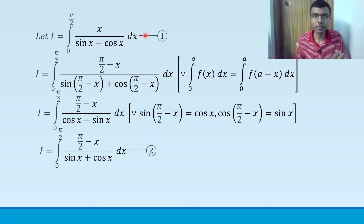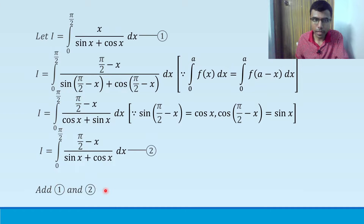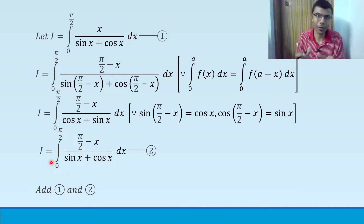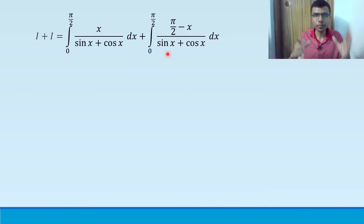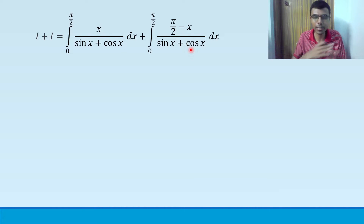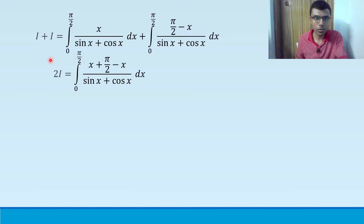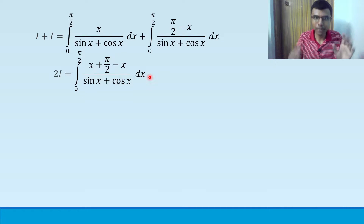Now I'm going to add equations 1 and 2. Both have I on the LHS, so the LHS becomes I + I = 2I. On the RHS, both integrals have the same limits 0 to π/2 and the same denominator sin x + cos x. Since the denominators are identical, I can add the numerators: x + (π/2 − x) over sin x + cos x.